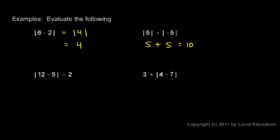This example here, I have 12 minus 5 inside my absolute value sign, so I do that first. I'm going to rewrite this whole expression, but instead of 12 minus 5, I can do that — 12 minus 5 is 7. So I have the absolute value of 7, which is simply 7. And then I still have this minus 2. So it's 7 minus 2, and that's equal to 5.